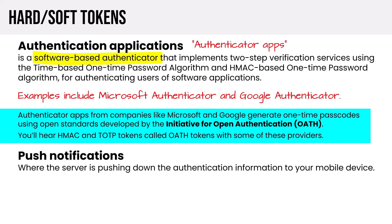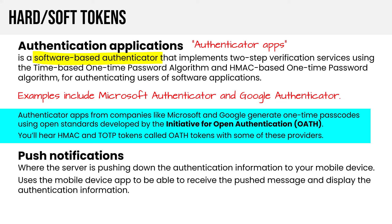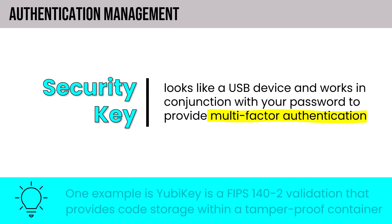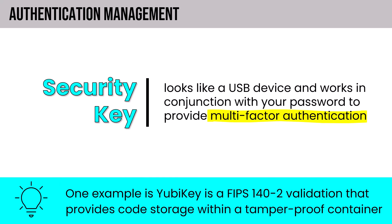Push notifications involve the server pushing authentication information to your mobile device app, which receives and displays the authentication information. These apps are available on iOS and Android. A security key looks like a USB device and works with your password to provide MFA — one example is the YubiKey, which is FIPS 140-2 validated and provides code storage within a tamper-proof container.